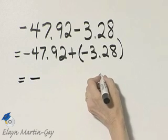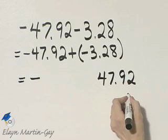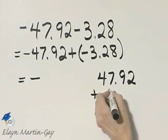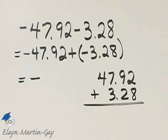So off to the side, I'm going to write down 47 and 92 hundredths, and I'm going to add to that 3 and 28 hundredths. Notice, I'm adding absolute value now, and I'm lining up the decimal points.